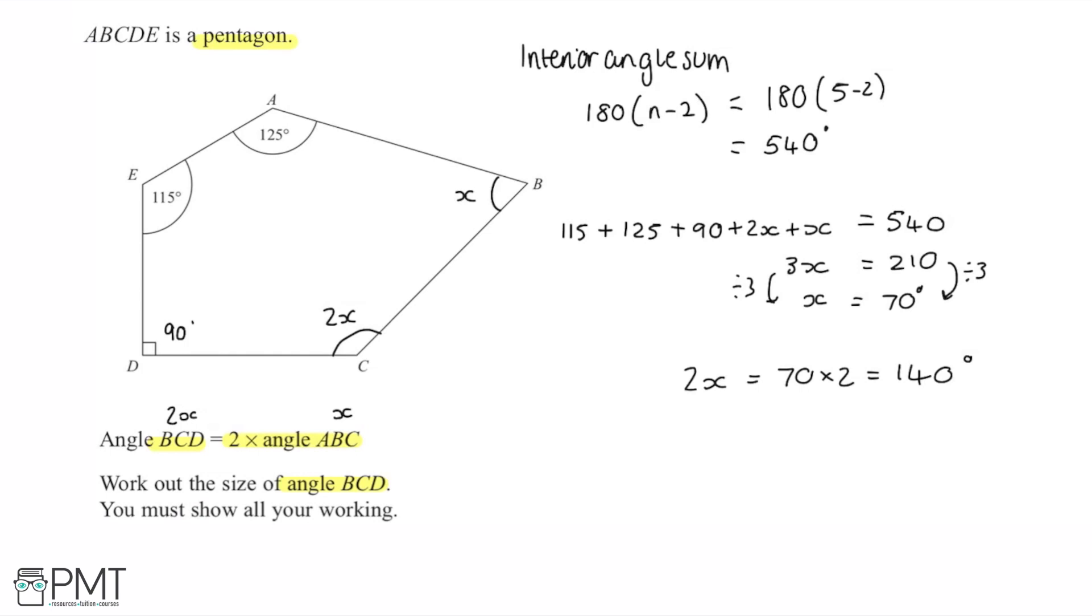Now as for how each of the marks are awarded here you would get the first mark for the process to find the interior sum of the angles of a pentagon so this working out step here. The second mark is for the correct answer of 540. Similarly here you could use the sum of the exterior angles and work that way around but I feel like this way is just a bit quicker and easier to get to the final answer.